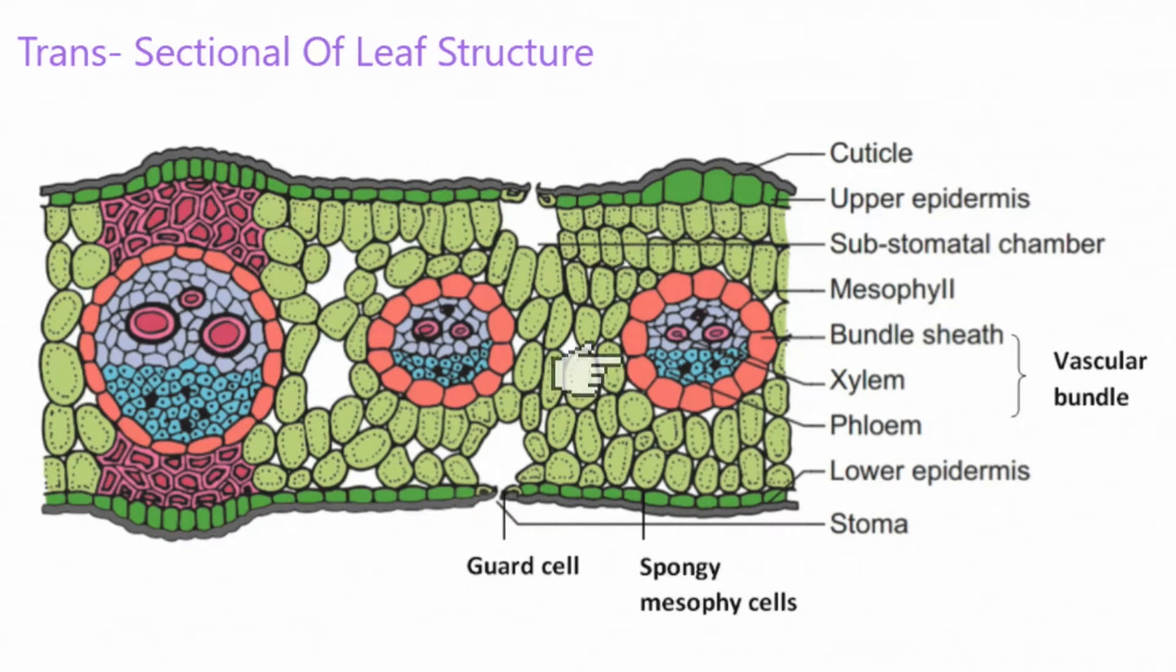The red circular shape is called bundle sheath. The bundle sheath surrounds the xylem and phloem. The bundle sheath, along with the xylem and phloem, is called the vascular bundle.